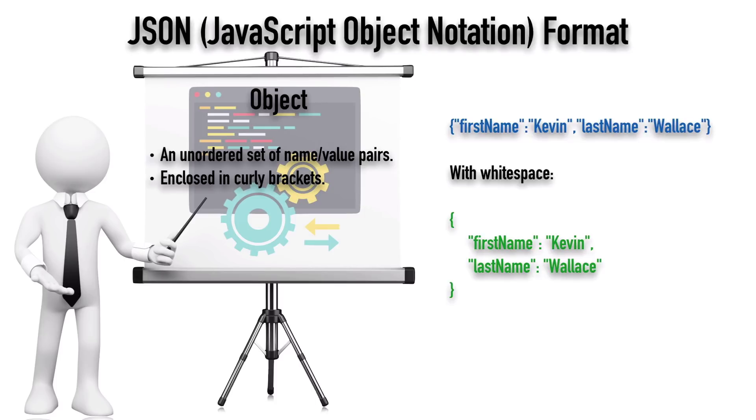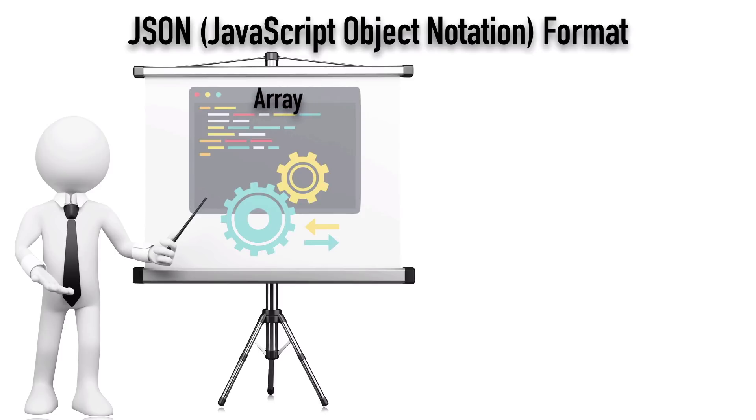We said that JSON has something similar to a Python list called an array. Just like a Python list, an array is an ordered set of comma-separated values enclosed in straight brackets.